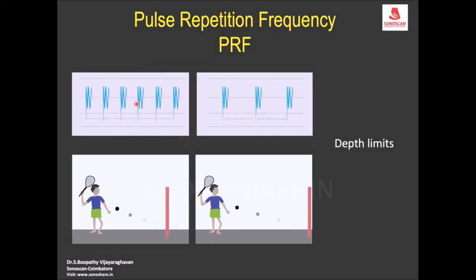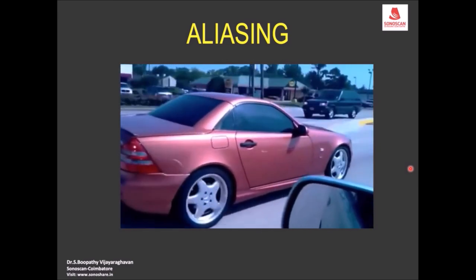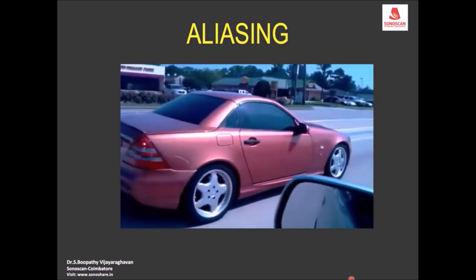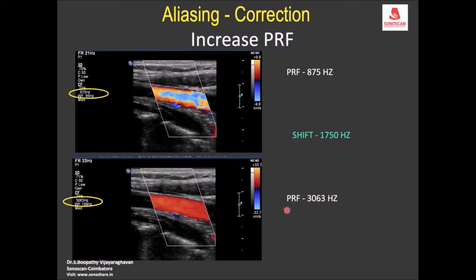The pulse repetition frequency (PRF) is the number of ultrasound pulses sent per second. If the Doppler shift exceeds half the PRF — the Nyquist limit — aliasing occurs. For example, if the Nyquist limit used is 875 Hz or 10 centimeters per second but the actual Doppler shift is higher, aliasing results. Increasing the PRF to 3000 Hz corrects the aliasing and displays the correct color throughout the vessel.